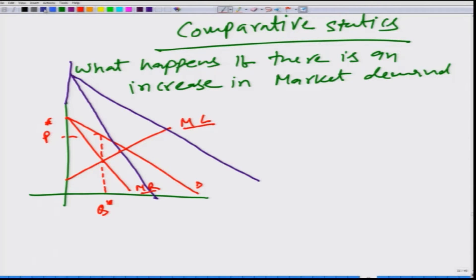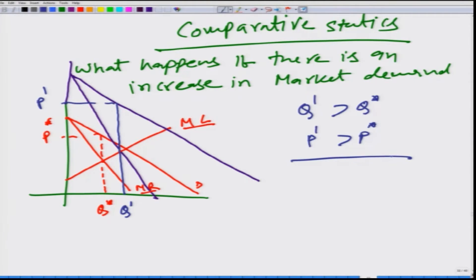The new equilibrium output is Q dash and the new market price is P dash. Very clearly, Q dash is greater than Q star and P dash is greater than P star. So, if market demand shifts outward, the quantity supplied by the monopolist increases and the price at which it supplies its output also increases.